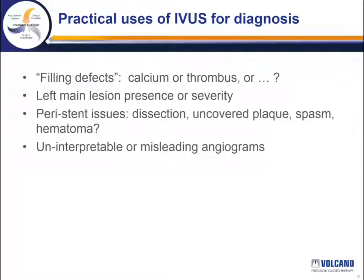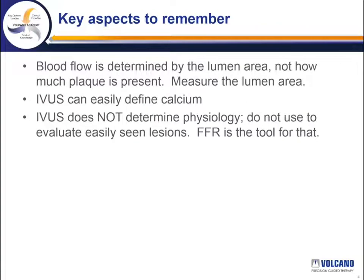I've listed four here, and I'm going to show you some examples of these in the next few slides. A few things to remember first: blood flow is determined by the lumen area, not how much plaque is present. Therefore, we need to focus on measuring the lumen area when there is a question about flow limitation.